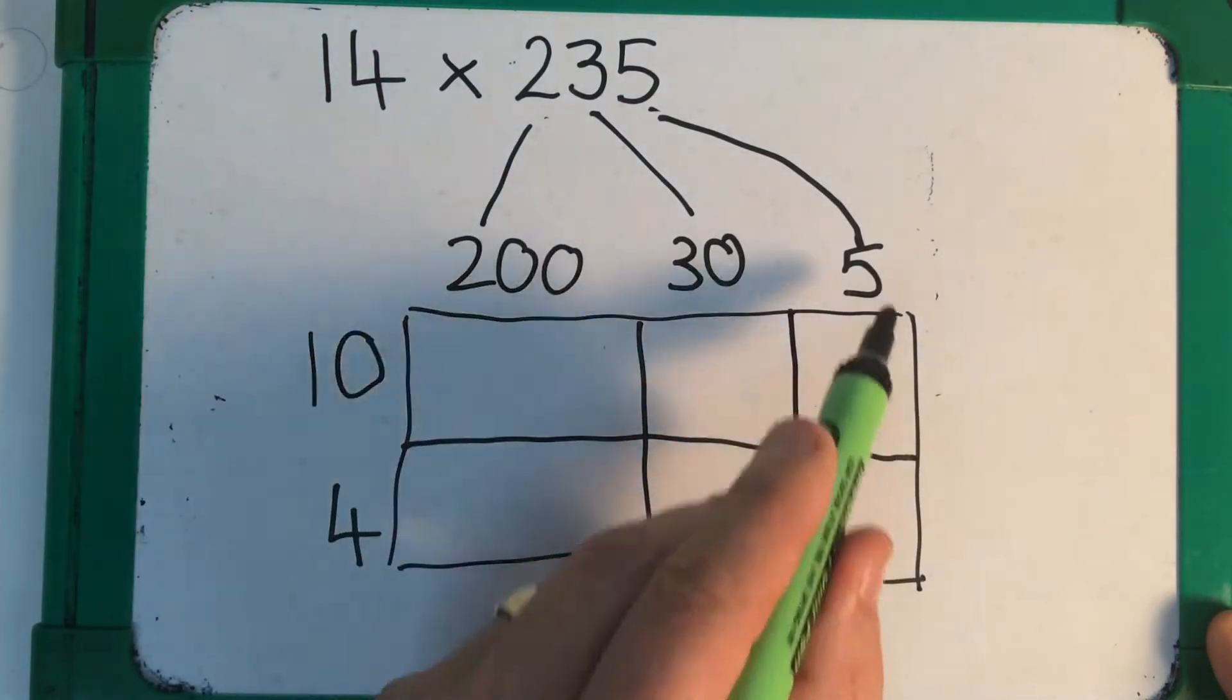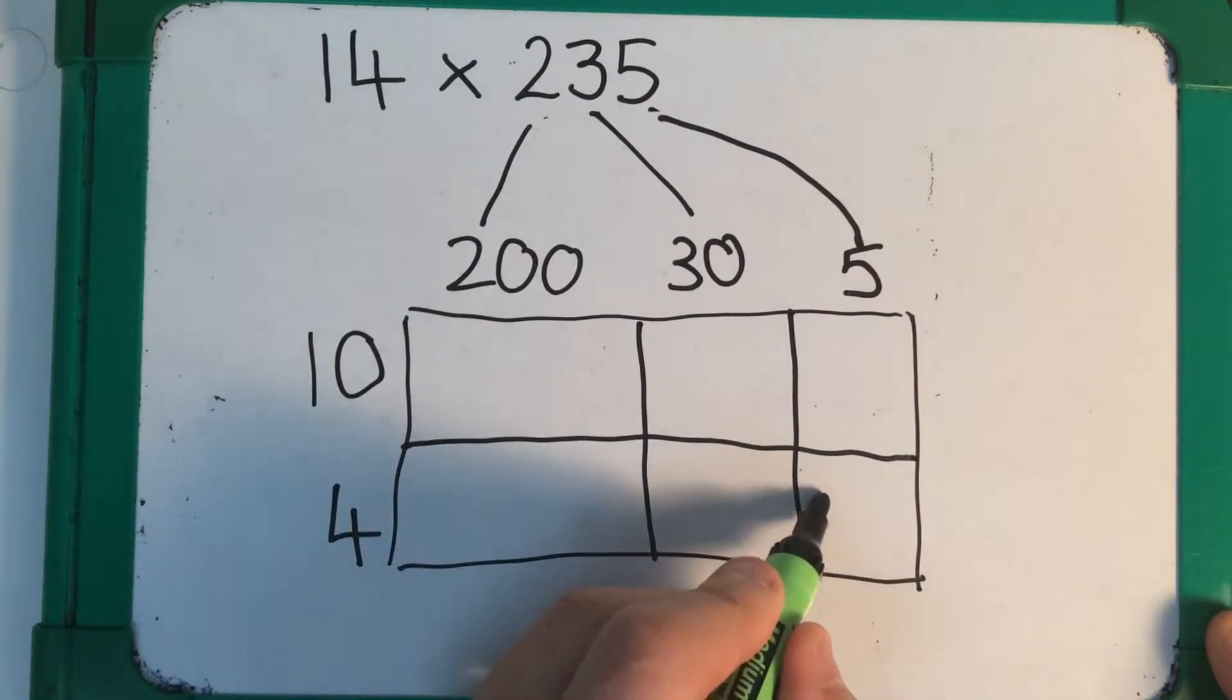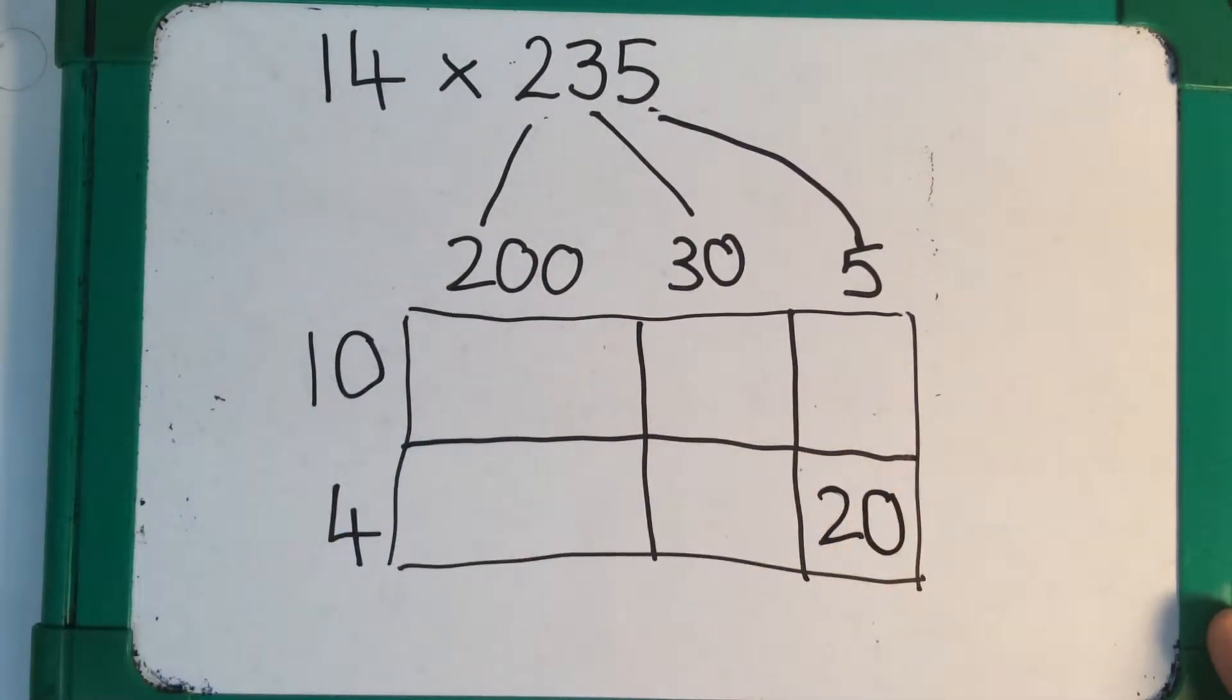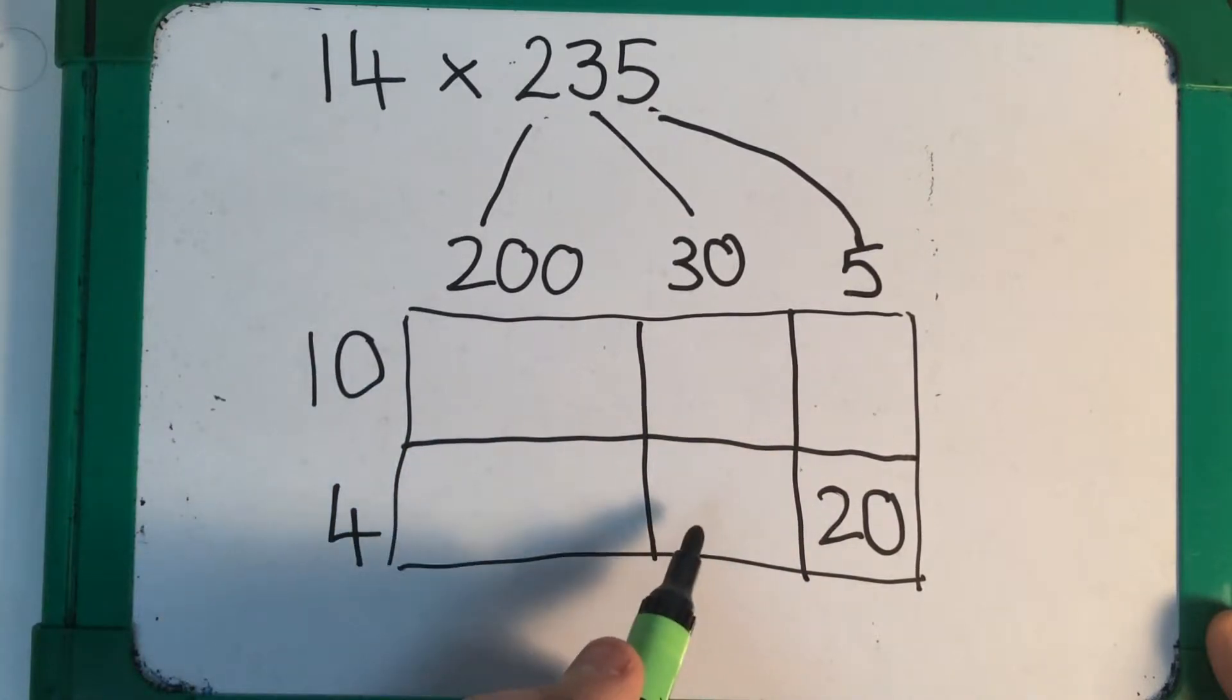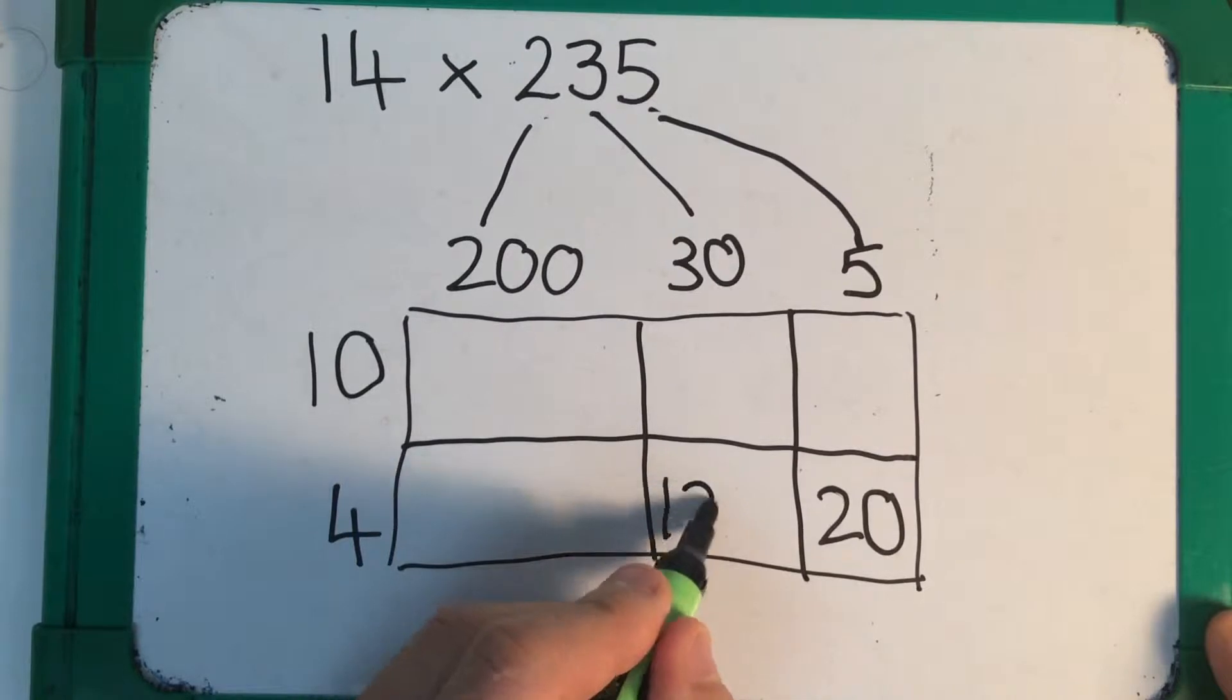Now I'm going to start off with the smaller numbers. 4 times 5 is 20. 4 times 30. Well, 4 times 3 is 12. So 4 times 30 is going to be 10 times 12, which is 120.